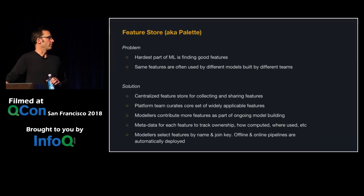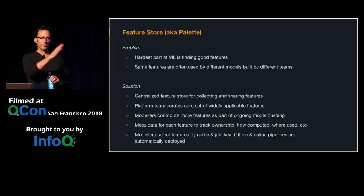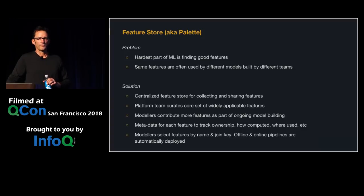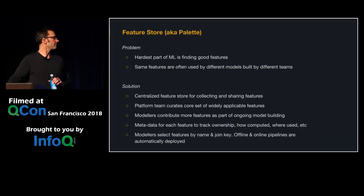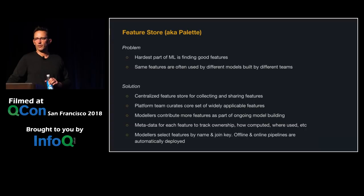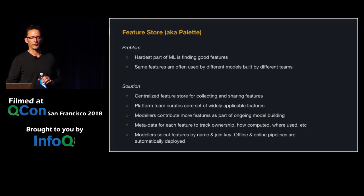We've built a centralized feature store where teams can register, curate, and share features used across different models. Rather than writing new queries to find features, you can just pick and choose from the feature store. More importantly, once your model goes into production, we can automatically wire up the pipeline to deliver those features to the model at prediction time.